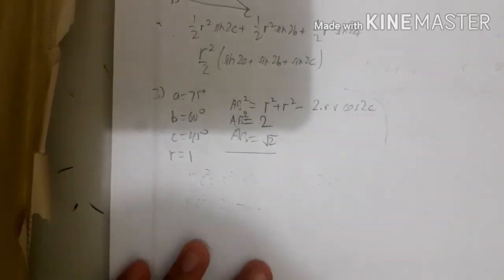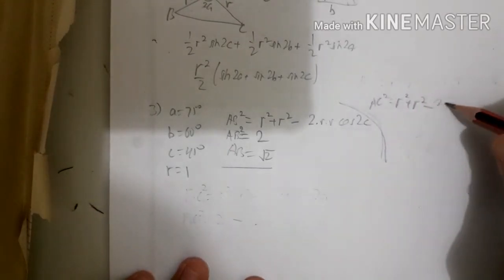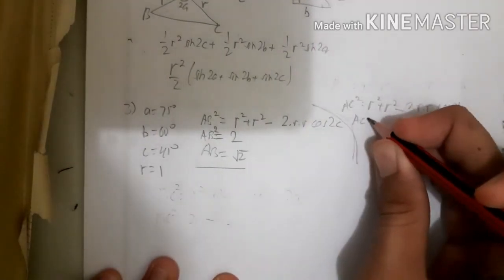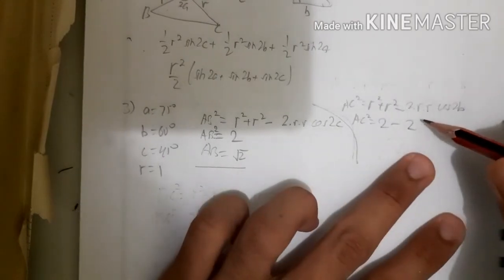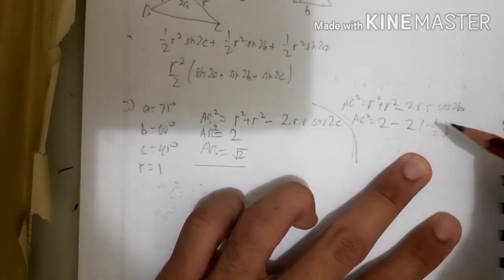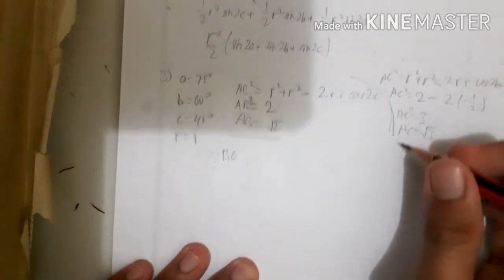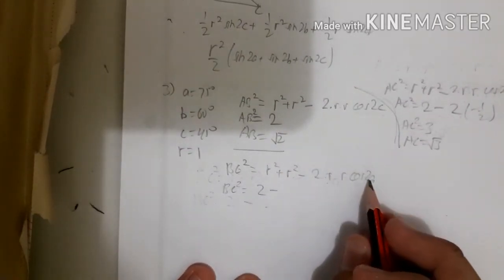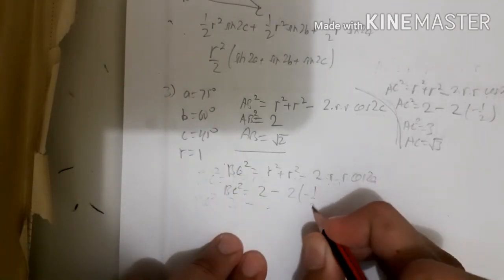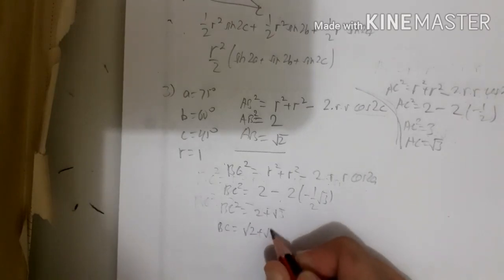For AC: AC² = R² + R² − 2R²cos(2B) = 2 − 2cos(120°) = 2 − 2(−½) = 2 + 1 = 3, so AC = √3. For BC: BC² = R² + R² − 2R²cos(2A) = 2 − 2cos(150°) = 2 − 2(−√3/2) = 2 + √3, so BC = √(2 + √3).